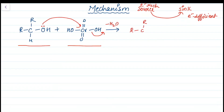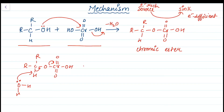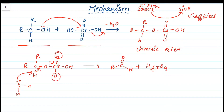The oxygen of the alcohol attacks chromium, and since this is an acidic medium, water is easily removed to form a chromic ester intermediate. Then a water molecule abstracts the alpha hydrogen, this C–H bond breaks, and the product aldehyde or ketone is formed along with H2CrO3 (chromous acid) and water as byproducts.